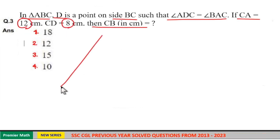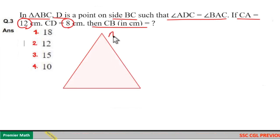Here this is triangle ABC. Now this is point D on BC. Angle ADC is equal to angle BAC.